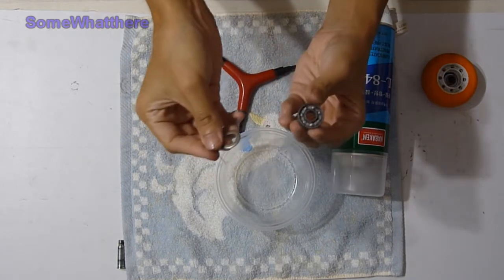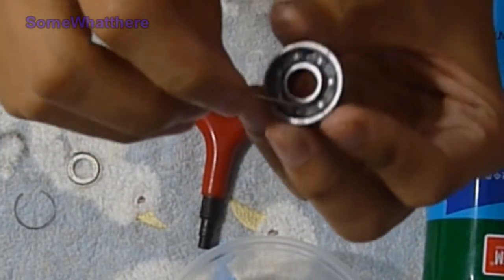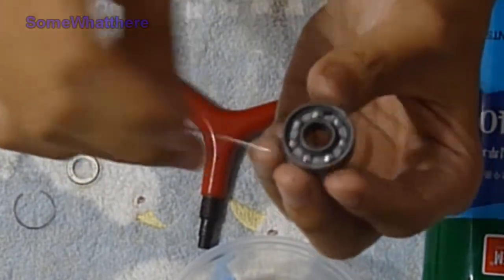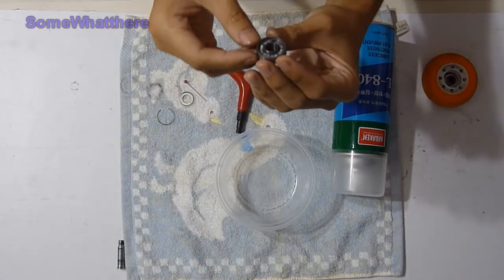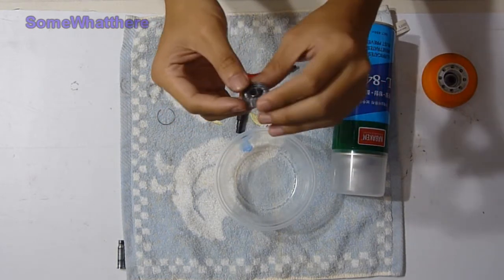So here it is. As you can see, inside the ball bearing there is actually lubricant, some oil, and also a lot of dust. A standard bearing inside has one, two, three, four, five, six, seven ball bearings inside.